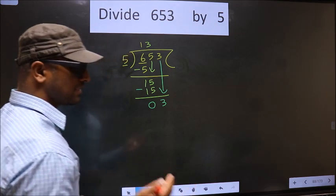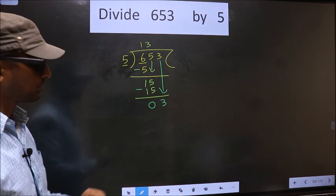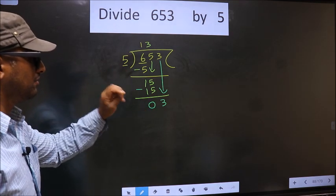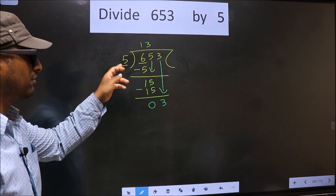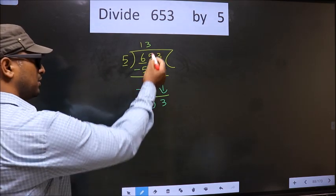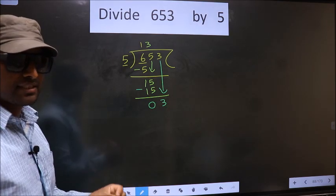This is where the mistake happens. And the mistake is this: Here we have 3. Here 5. 3 is smaller than 5. So what many do is, they put a dot and take 0 here. Which is wrong.